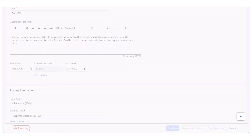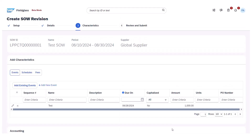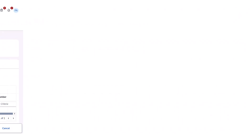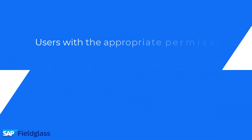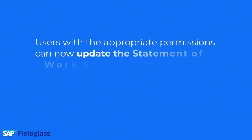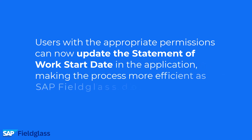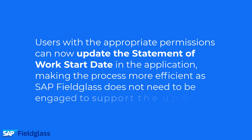After entering the correct date, the user can click Continue to move forward with the revision. Users with the appropriate permissions can now update the Statement of Work start date in the application, making the process more efficient as SAP Fieldglass does not need to be engaged to support the update.